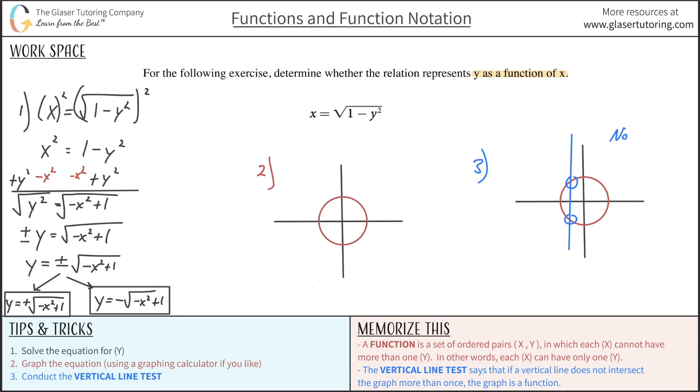So therefore, since it failed the vertical line test, we can call this not a function. So the original equation that we were given is the equation of a circle, and this is not a function.